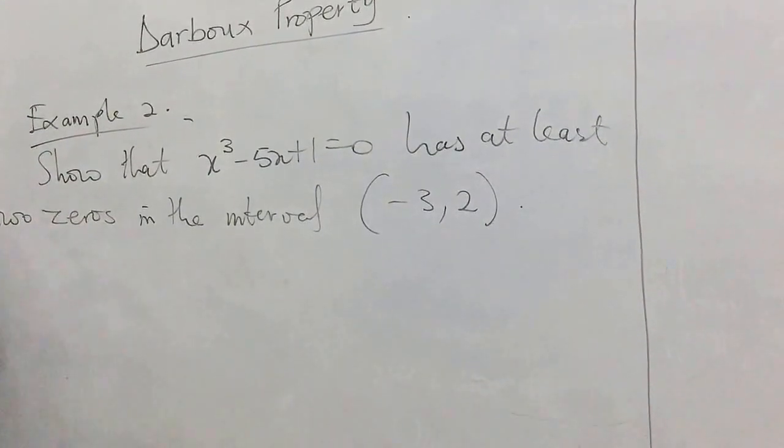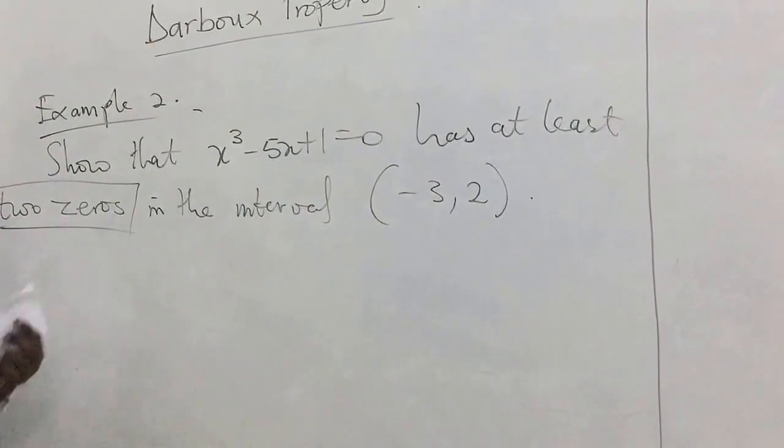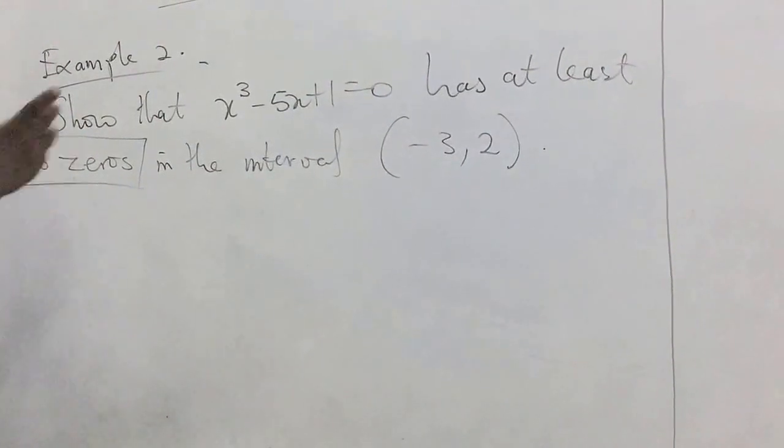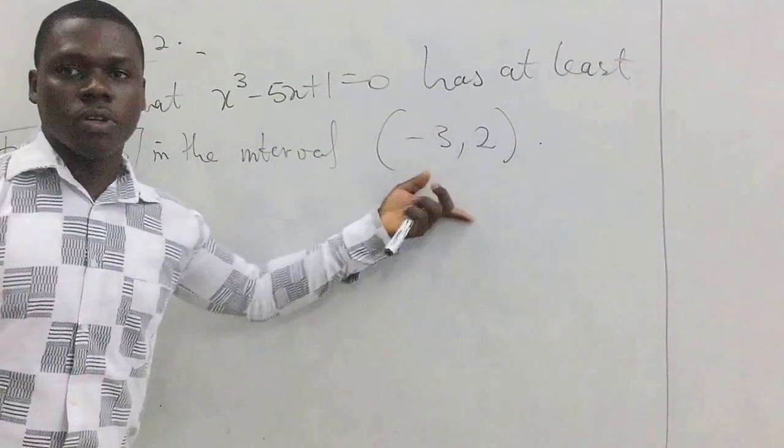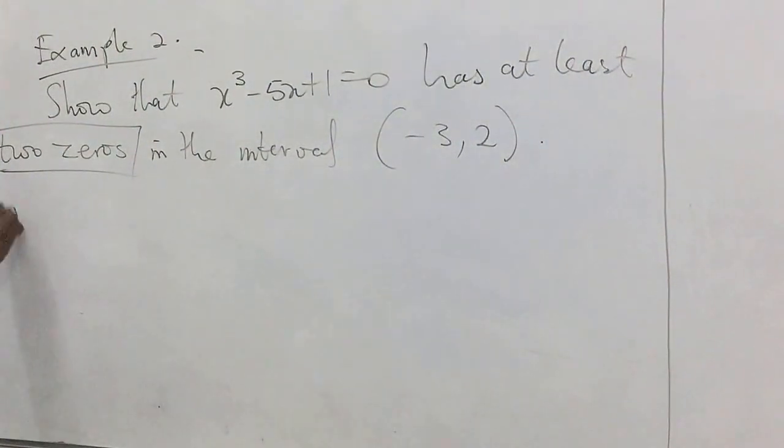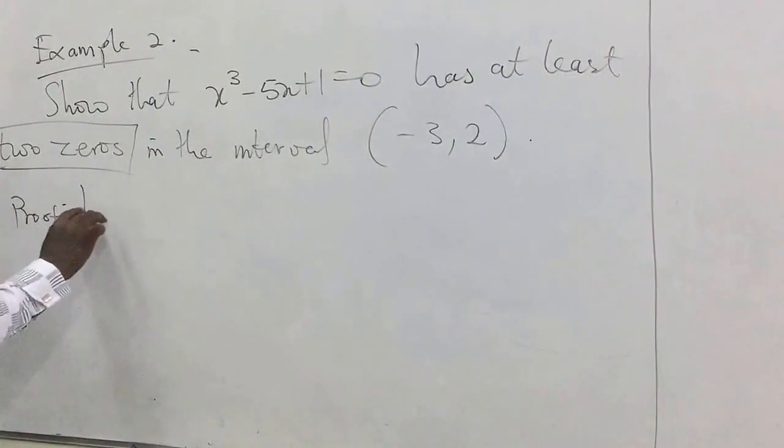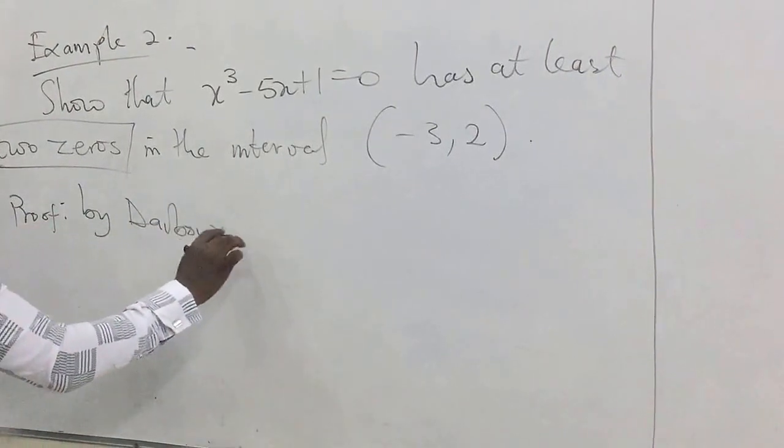It has at least two zeros at least, meaning two or more solutions in this interval. We are proving this, so we are proving by Bolzano's property.